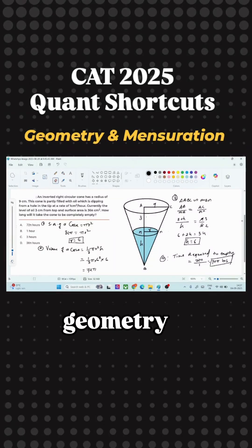Let's understand quickly how to solve geometry and mensuration questions. The question is: an inverted right circular cone has radius of 9 cm. So this is the cone of radius 9 cm.